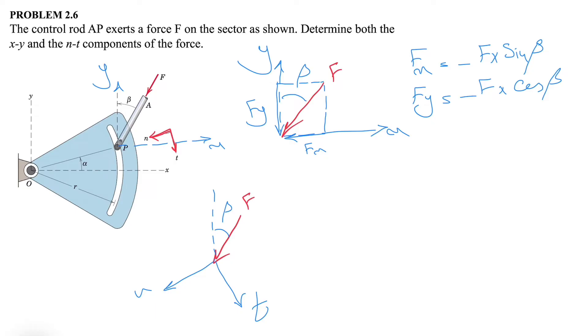What we have is we have this as our n and we have this one as our t. What we know from here is that this angle is beta, which is the angle of F with the vertical axis which is y. If we continue the line of action of this force, what we have in here is that we consider this our y.